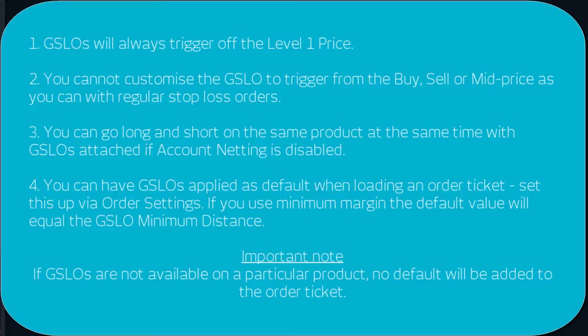You can have GSLOs applied as default. When loading an order ticket, set this up via order settings, and if you use the minimum margin, the default value will equal the GSLO minimum distance. If GSLOs are not available in a particular product, no default will be added to the order ticket.